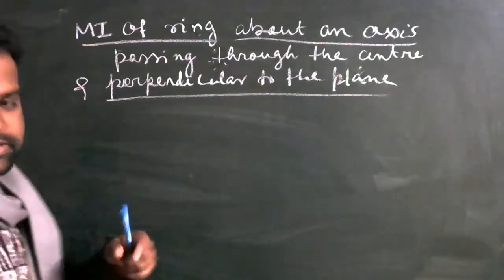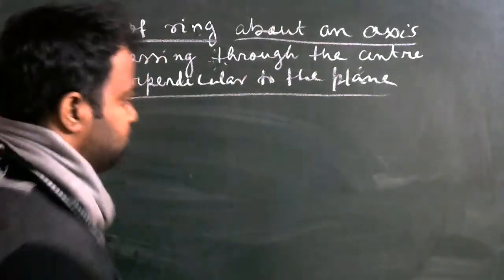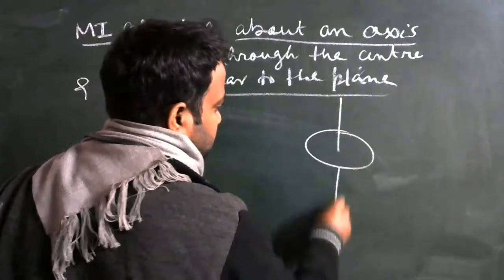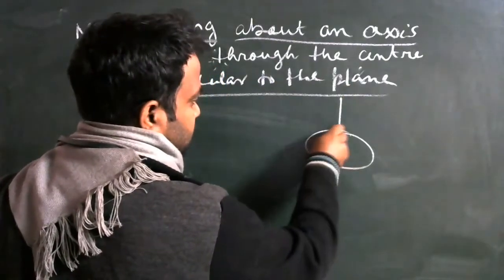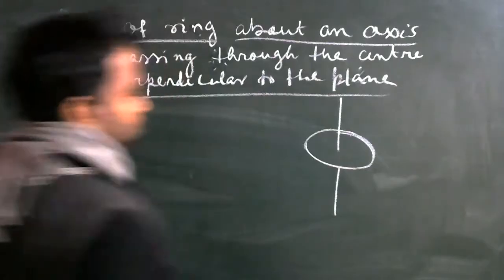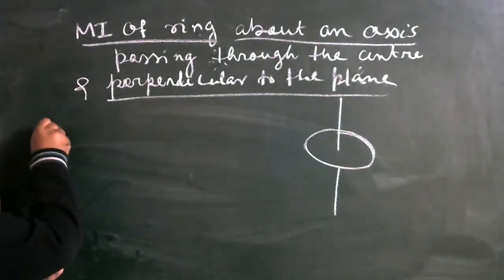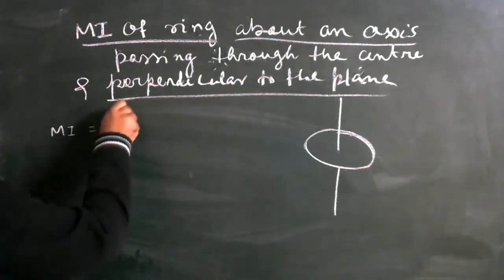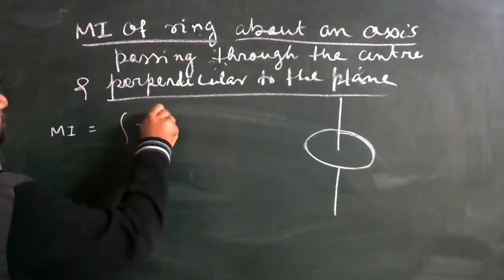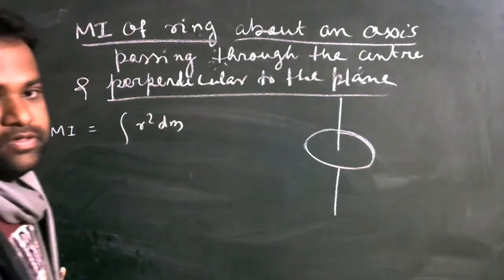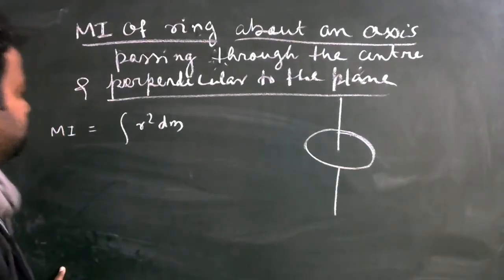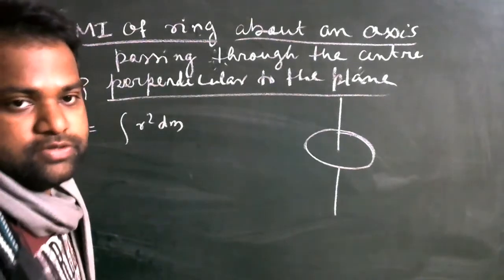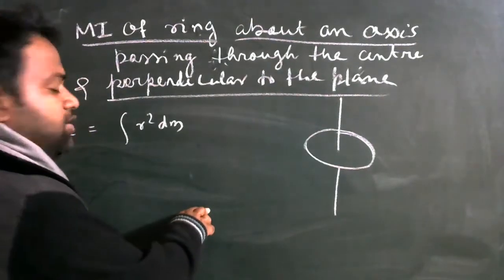So here it is passing through the center and perpendicular to the axis of rotation. How do you calculate? This is the ring and the axis passes through the center perpendicular to it. You know that your moment of inertia is equal to integration R squared dm. This is the moment of inertia formula. If the mass of that body is distributed uniformly, then you can write R squared dm.